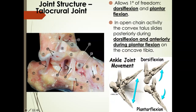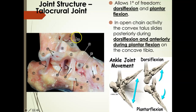The talocrural joint happens to be my most favorite joint in the entire human body. It represents the articulation between the distal tibia and the talus — and we can even add in the fibula. The talocrural joint allows for one degree of freedom, essentially dorsiflexion and plantar flexion. In the open kinetic chain, when the patient's foot is off the ground, during dorsiflexion the talus is going to glide posteriorly.